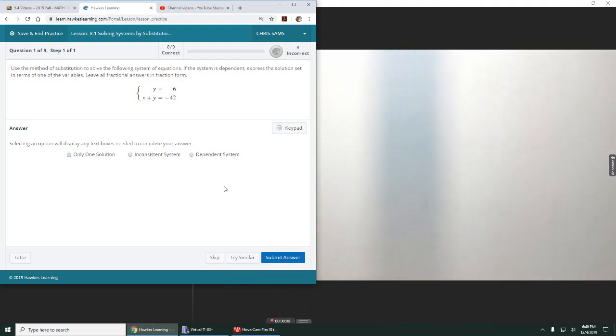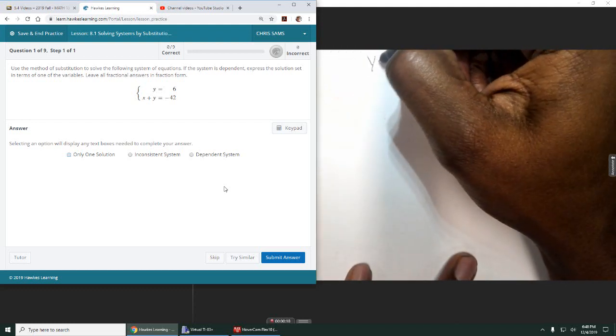This first problem, we have two equations given. Any time you have one of them solved for y or x, for example, we have y equals 6 as one of them.